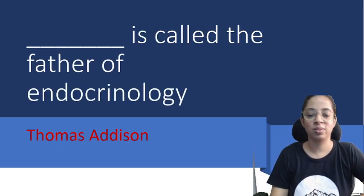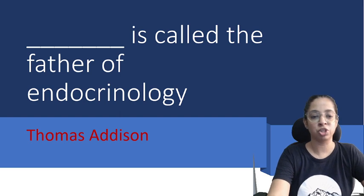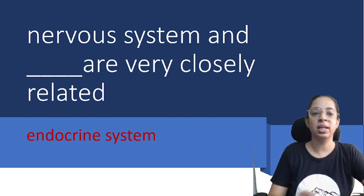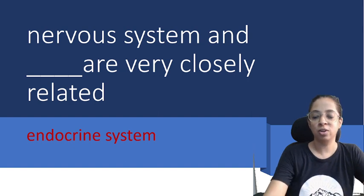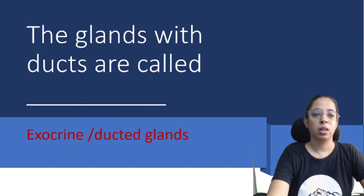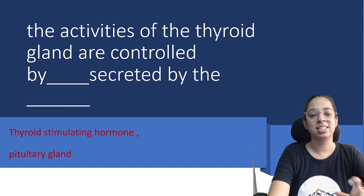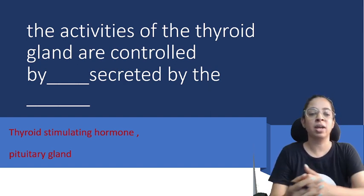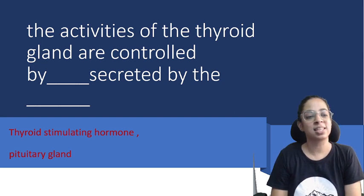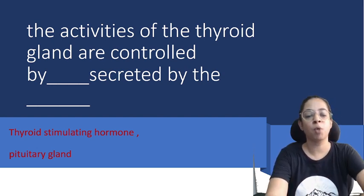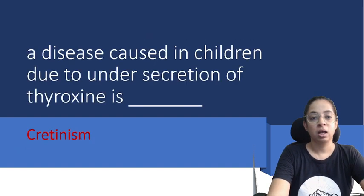Now the next category is fill in the blanks. Thomas Edison — actually, Thomas Addison — is called the father of endocrinology. The nervous system and the endocrine system are very closely related. The glands with ducts are called exocrine or ducted glands. The activities of the thyroid gland are controlled by thyroid stimulating hormone, secreted by the pituitary gland — be very specific about which answer goes in which blank. A disease caused in children due to under-secretion of thyroxine is cretinism.